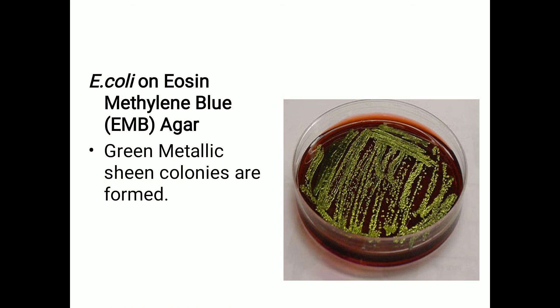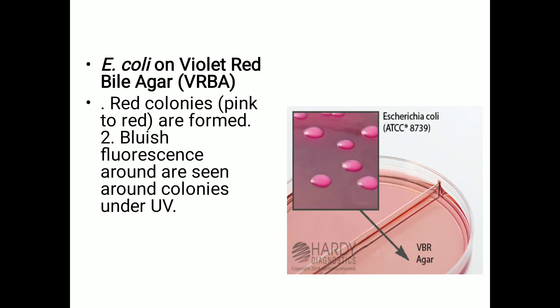Finally, we have VRBA — Violet Red Bile Agar. When E. coli is grown on this media, red or pink-to-red colonies are formed. Additionally, a bluish fluorescence is observed around the colonies when examined under UV light. That covers all the cultural characteristics of Escherichia coli.